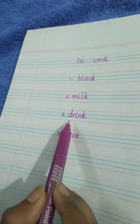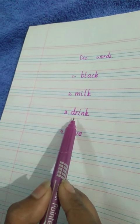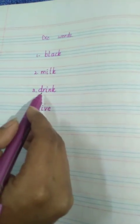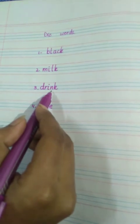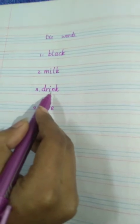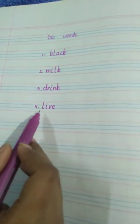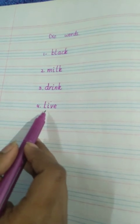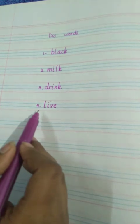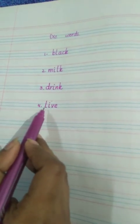Number three, drink. This is how I read it, initial consonant blend. Read it, Dr-I-N-K, drink. Dr-I-N-K, drink. Number four is L-I-V-E, live. Live, L-I-V-E, live.